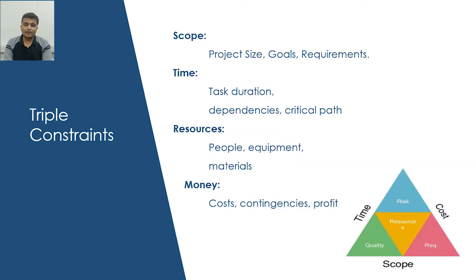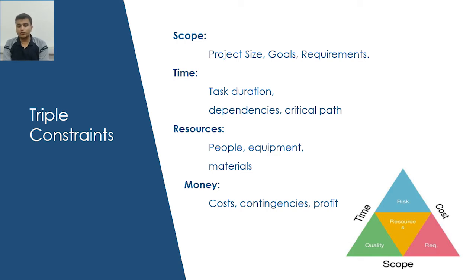Next topic is triple constraints. Different project management tools are available to perform this traditional approach. Any project revolves around three main basic factors which are most essential for project management: scope, time and cost. Scope includes project size, goals and requirements. Time includes task duration and dependencies. Cost includes cost, contingencies and profit. Other than this, resources are also important, which includes people, equipment and materials.